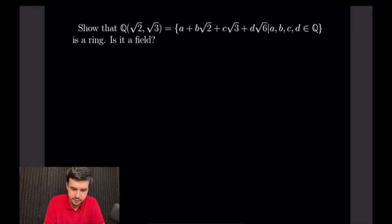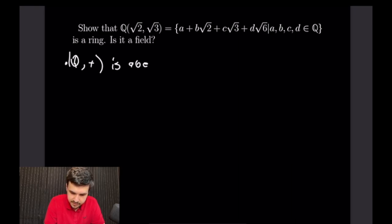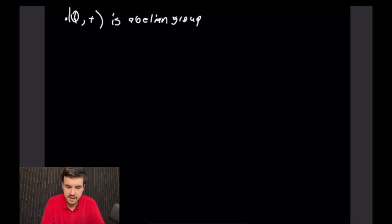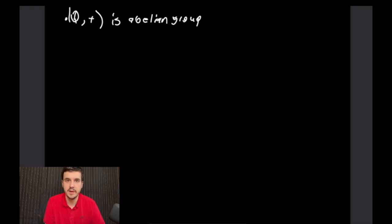We need to prove Q with addition is an abelian group. Abelian means commutative, but we also need identity, inverses, closure, and associativity. The identity is simply 0, since plugging 0 in for each coefficient gives 0, and adding 0 to anything returns what you started with.